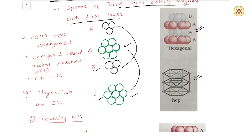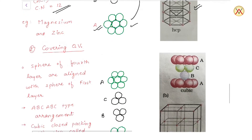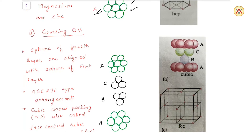For the coordination number of HCP — take the star ball: 6 balls touch it in the same layer, 3 balls touch it from above, and 3 balls touch it from below. So the total coordination number is 12. Every A layer is followed by a B layer, and every B layer is followed by an A layer. Therefore this type of packing is also called AB AB type packing. Magnesium and zinc crystals show this type of packing in nature.